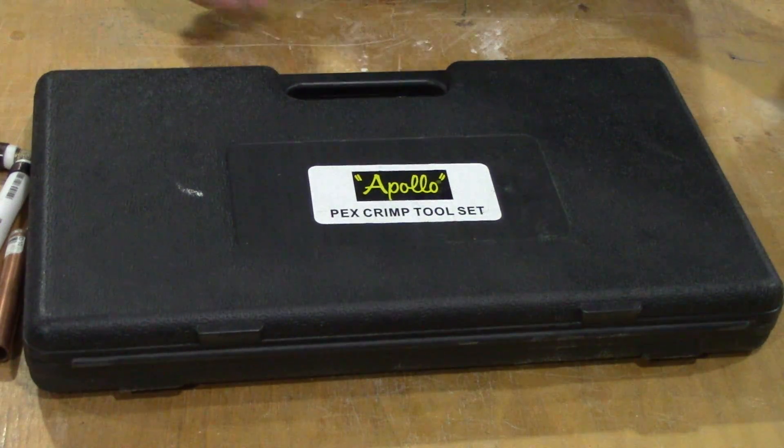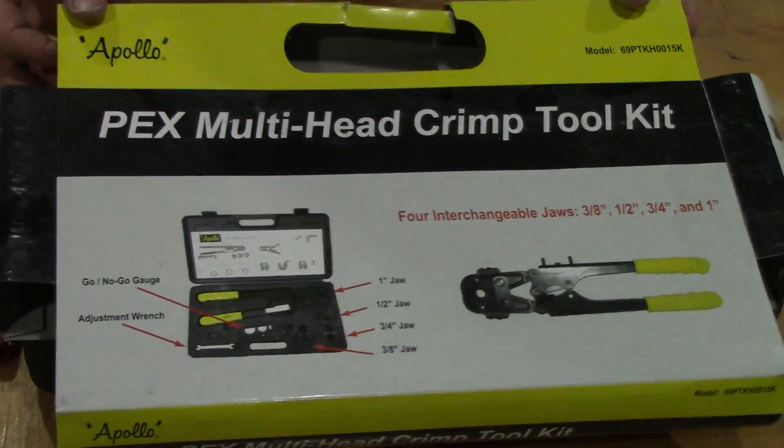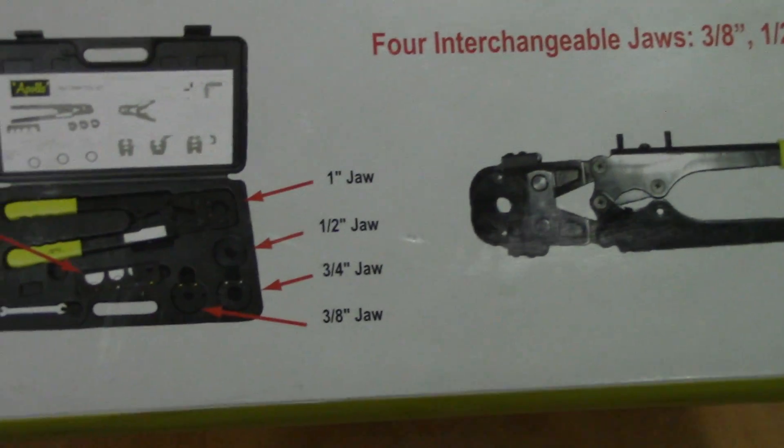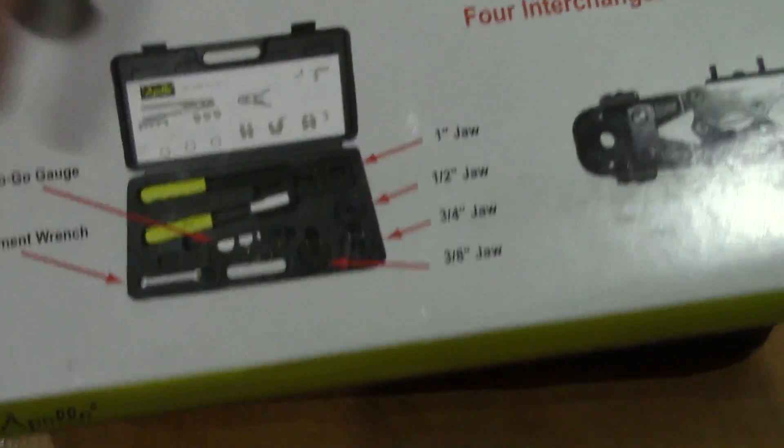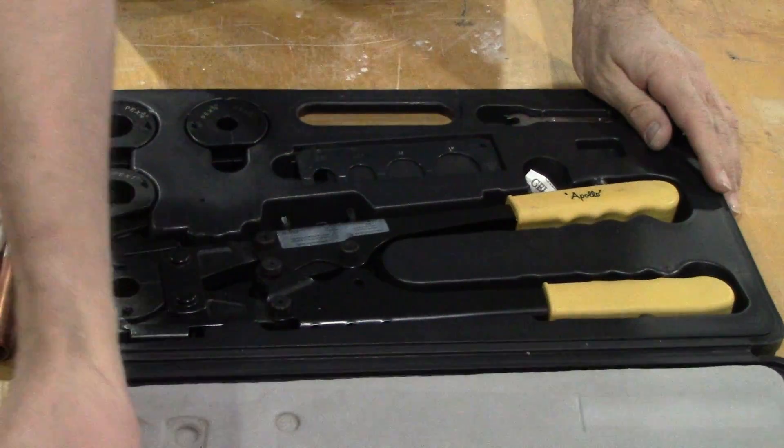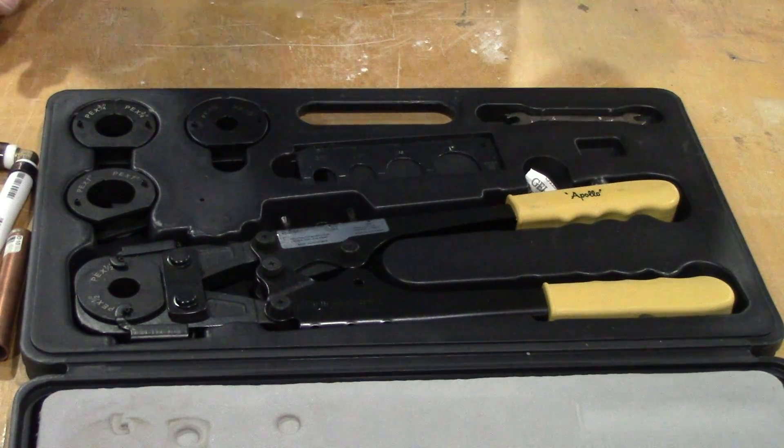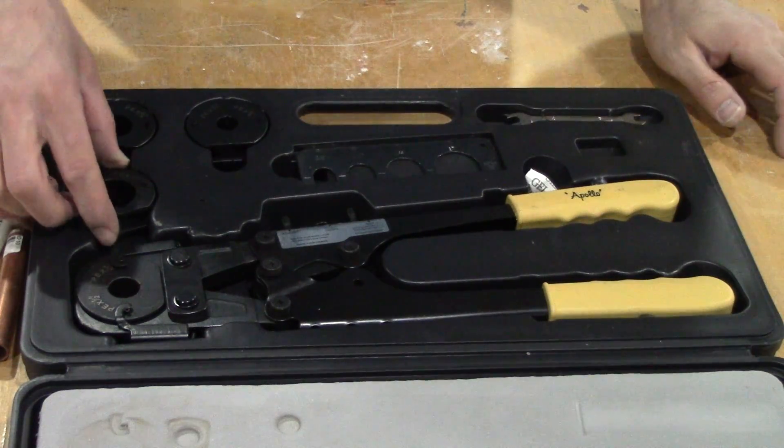Let me show you a tool set here. This is from Apollo. This is what the packaging would look like. Inside you get the tool and different fittings. These are expensive, so probably when you're done, if you're just doing your own home, you can sell it when you're done with it.